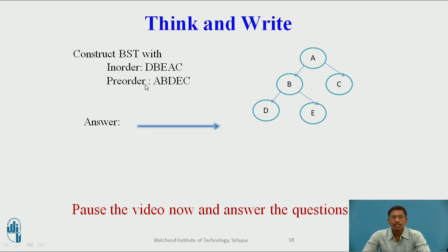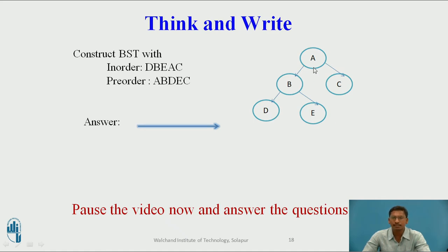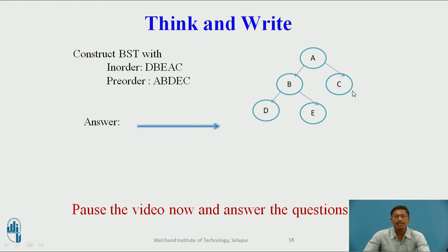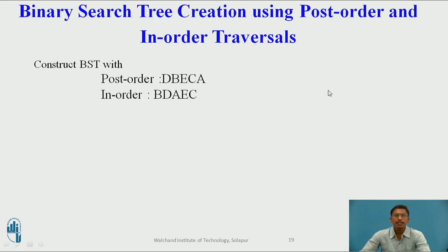Now we will see the answer. Taking one by one node from pre-order, the first node A becomes the root. Node B is on the left of A in in-order, so B is in the left subtree of A. Node D is on the left of both A and B, so D is in the left subtree of both. Node E is on the left of A and right of B, so E is in the right subtree of B. Last node C is on the right of A, so C is in the right subtree of A.